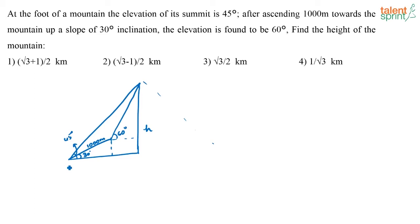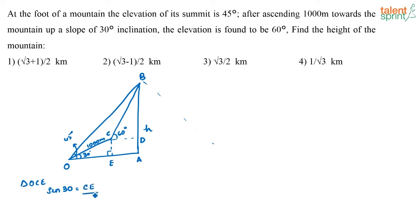Let us give these points some names: let this be O, E, A, D, B, and C. Now consider triangle OCE — this is a right angle. What is sine 30? Sine 30 equals CE divided by OC, which is CE divided by 1000.